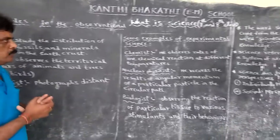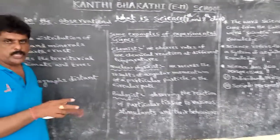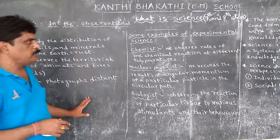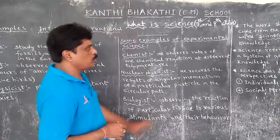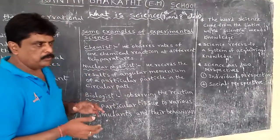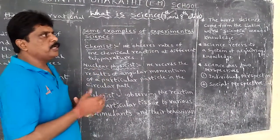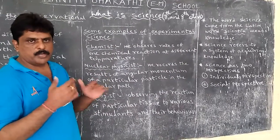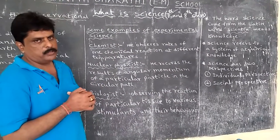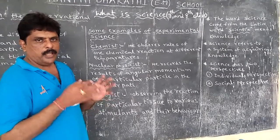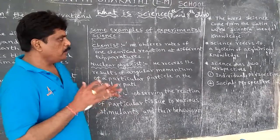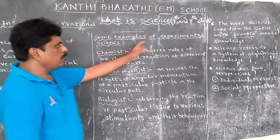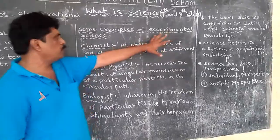I have already told that science is two types: observational science and experimental science. I have given some examples for observational science. Now here I have given some examples for experimental science. Some observations we have to believe as they are happening, but some are not accepted just by what scientists say — they require experimental observations.